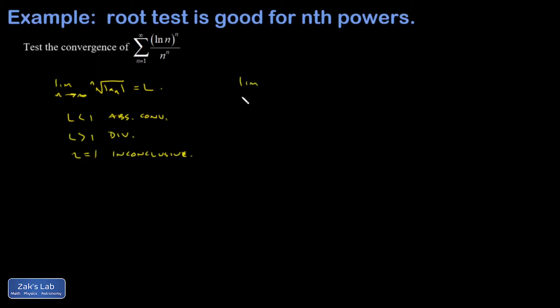So let's check out the large n limit of the nth root of natural log of n to the n over n to the n. And the nth root simply undoes the nth power.